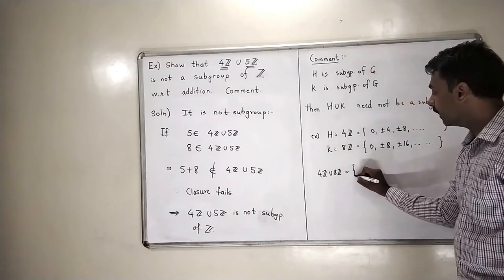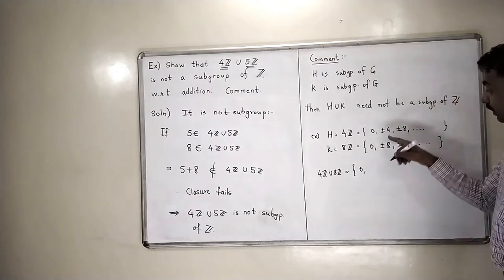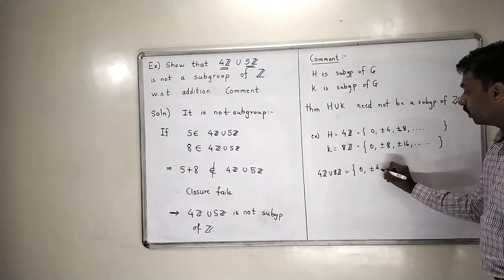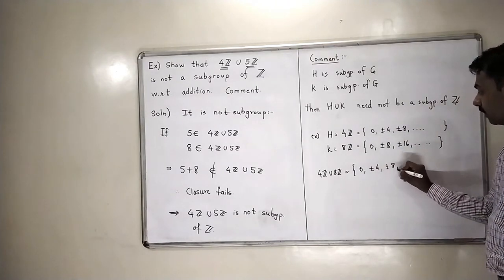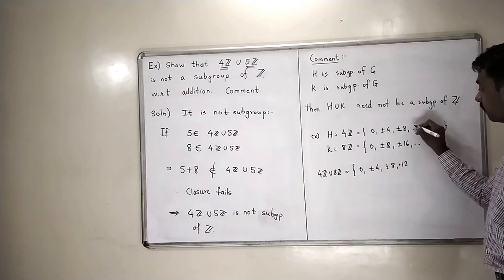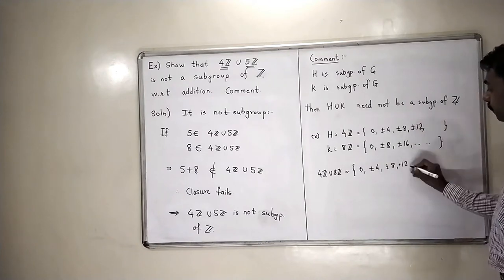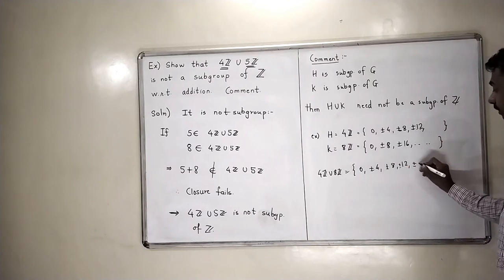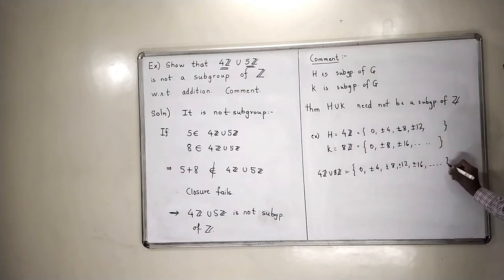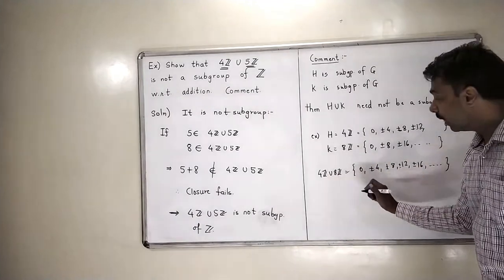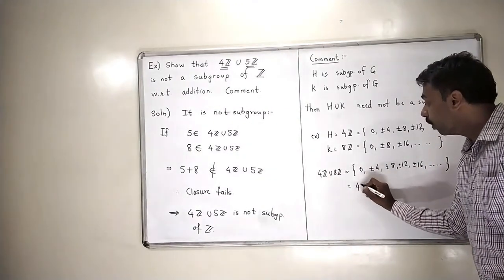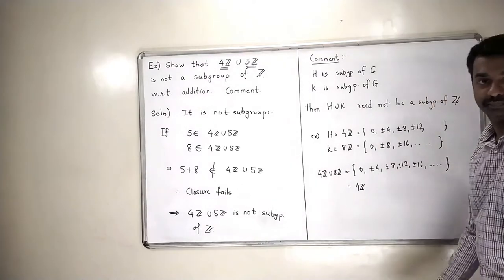do you see that you will get 0, you will get 4 also in that set, you will get 8 also in that set, you will get 12 also in that set, you will get 16 also in that set and all these numbers will be. So who is this set? Eventually, 4Z union 8Z comes up to be equal to 4Z.